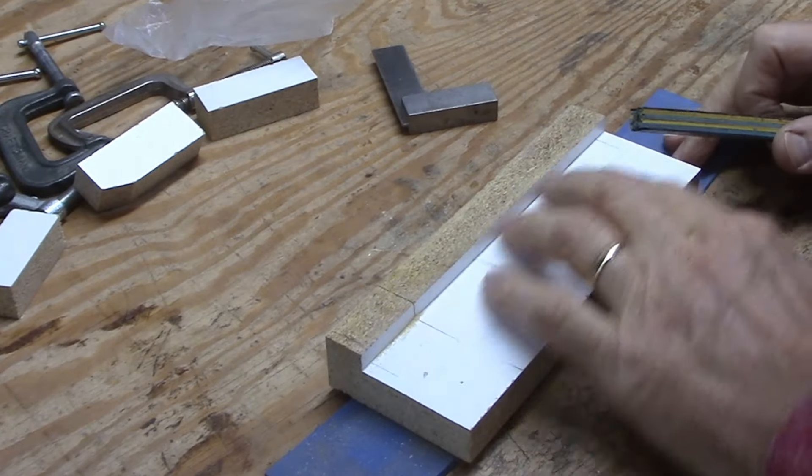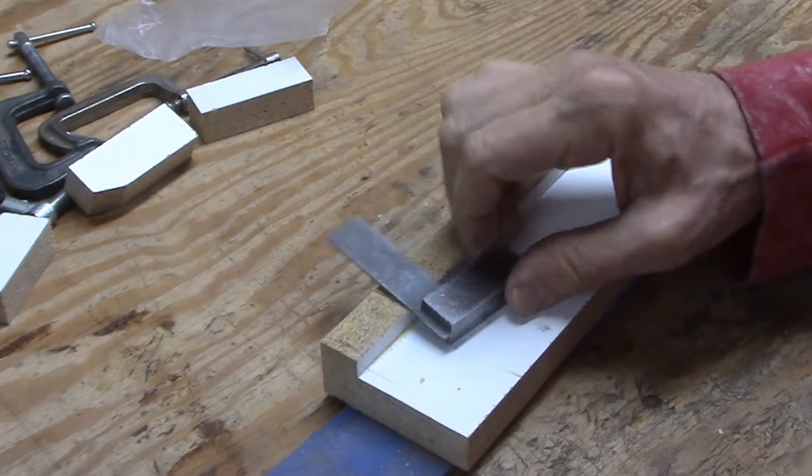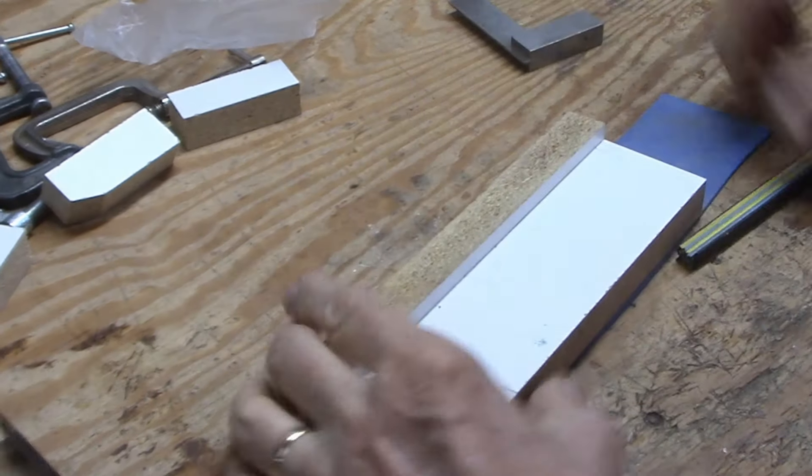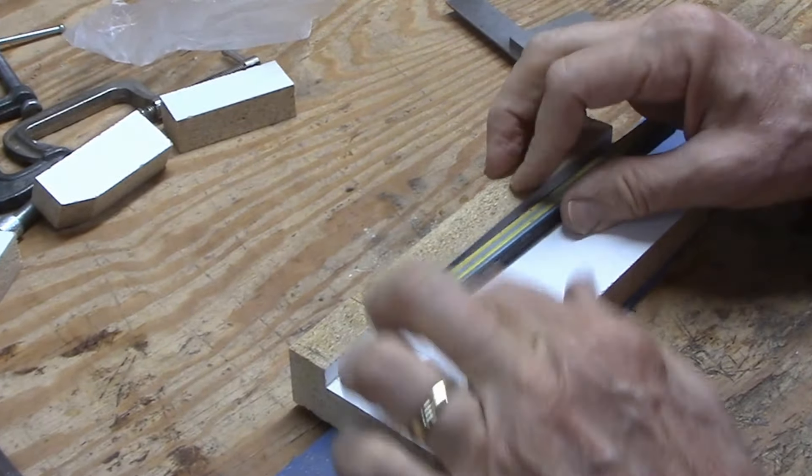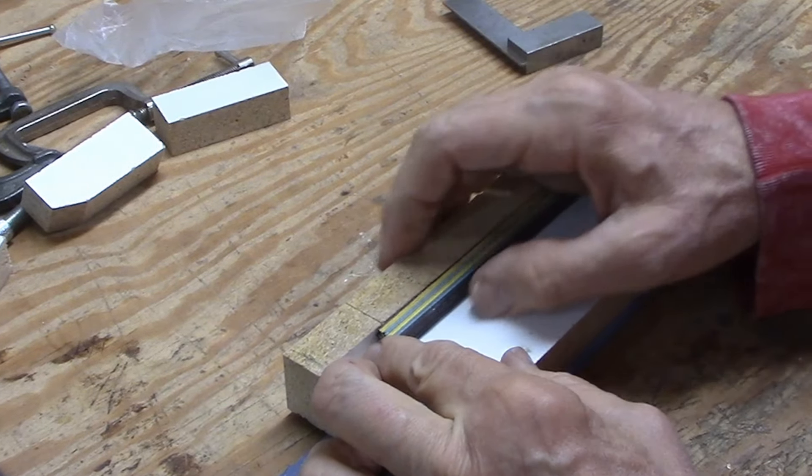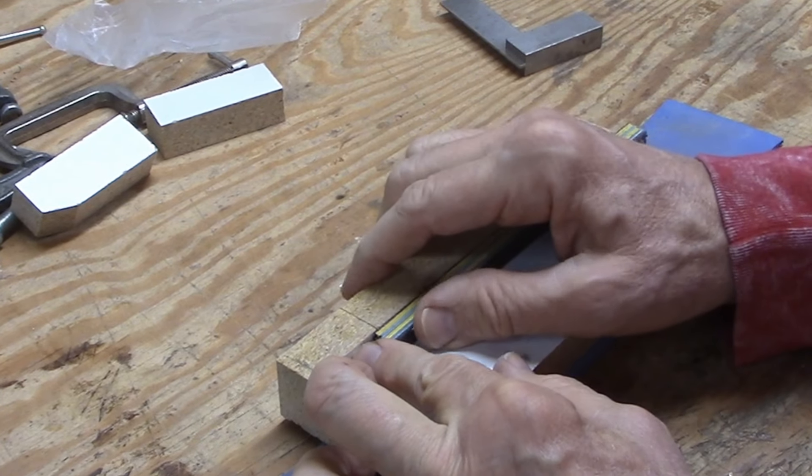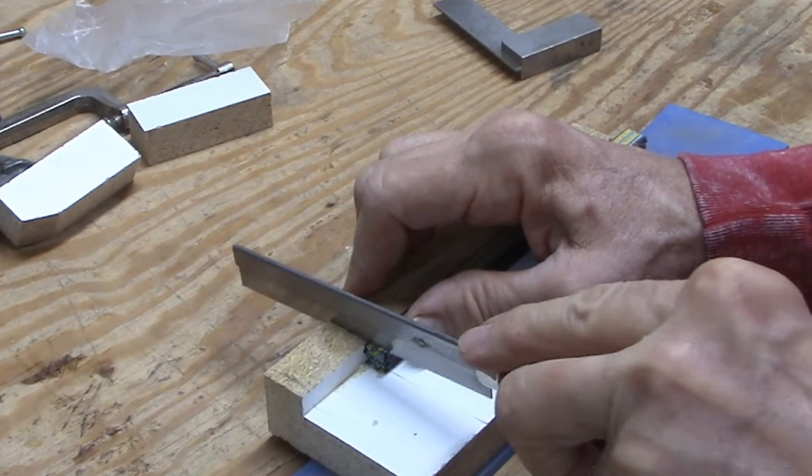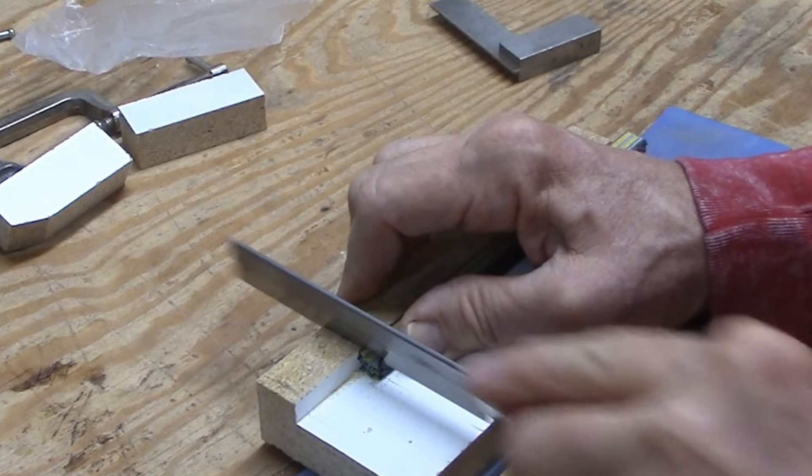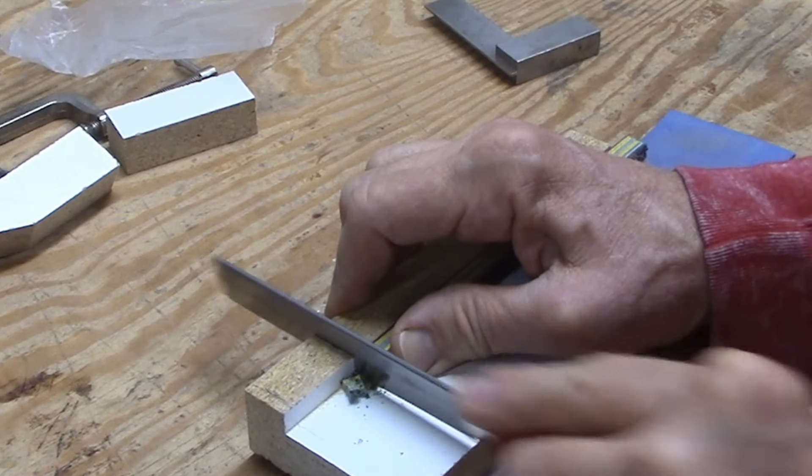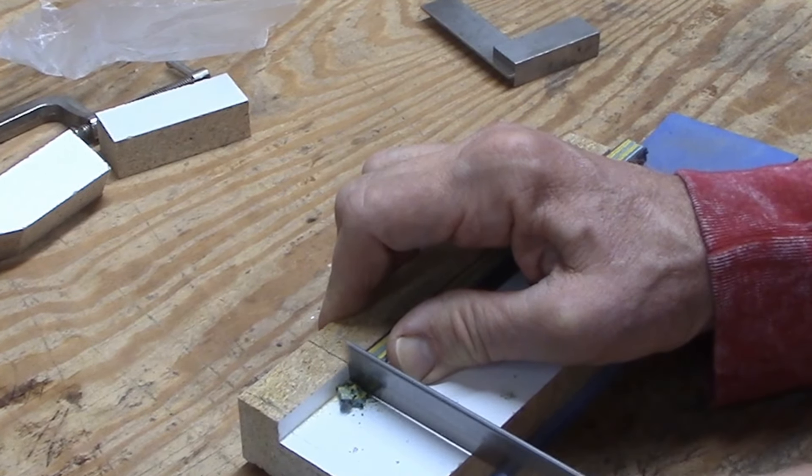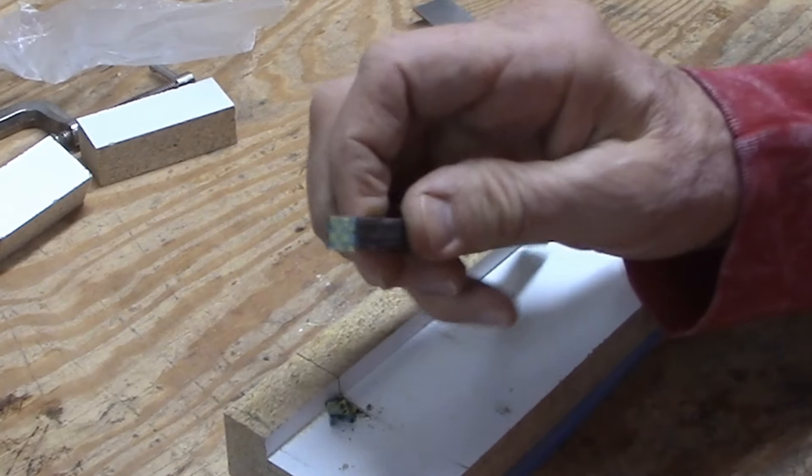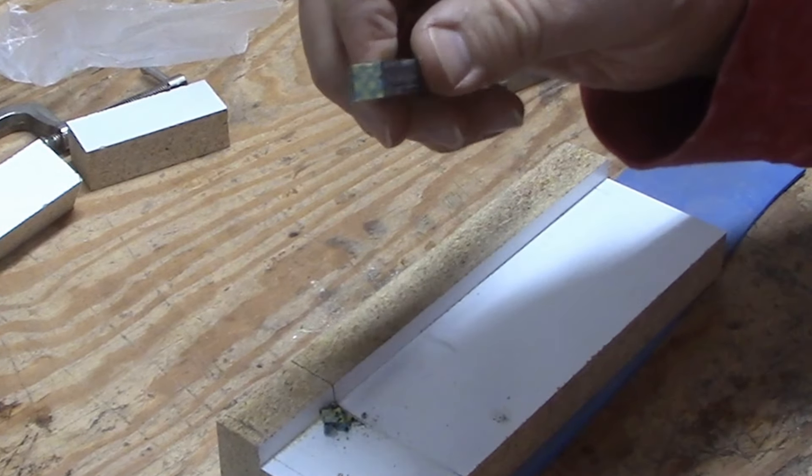I just realized if I cut a straight 90 degree line in this, I can use this fixture as kind of a miter box. And there's my pattern, just what I was hoping for.